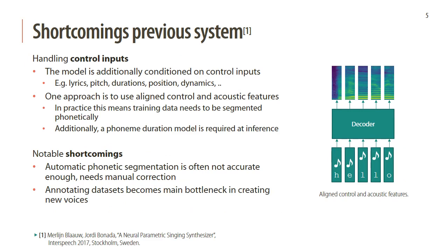Another shortcoming of the previous model is the way it handles control inputs. The prediction of each time step is conditioned on control inputs related to lyrics, pitch, duration, position, dynamics, and so on. The easiest approach is to use pre-aligned control and acoustic features, which means training data needs to be segmented phonetically, and a phoneme duration model is required at inference. For expressive singing, automatic phonetic segmentation is very hard to perform accurately enough, requiring manual correction, making dataset annotation the main bottleneck in creating new voices.